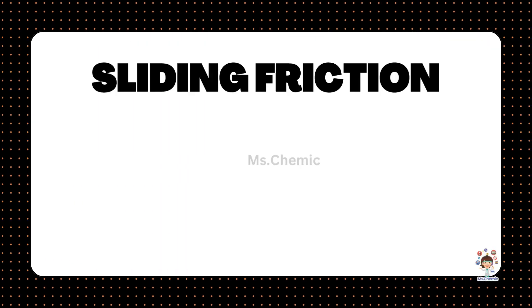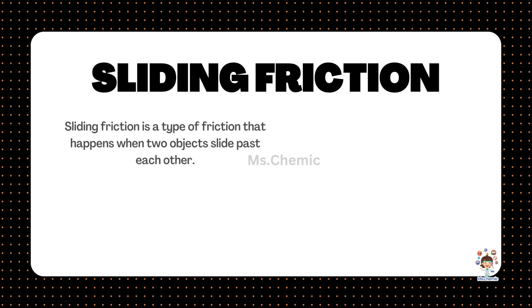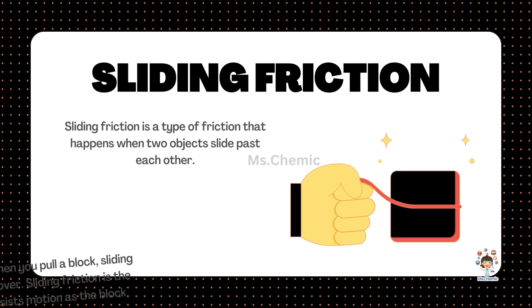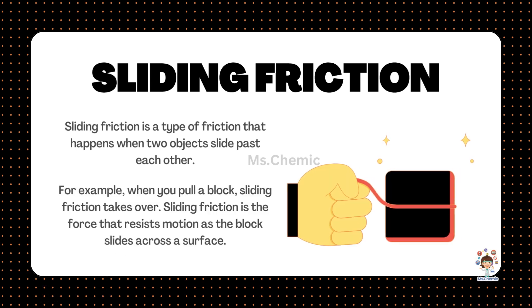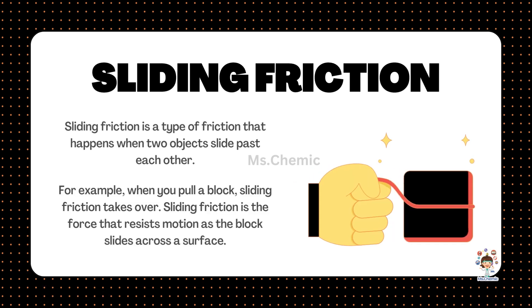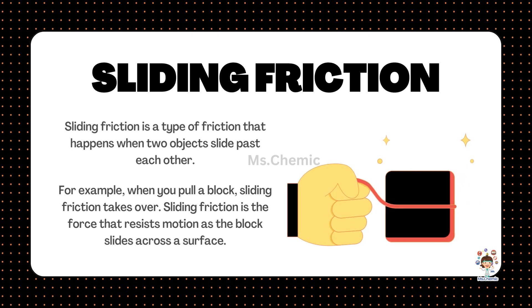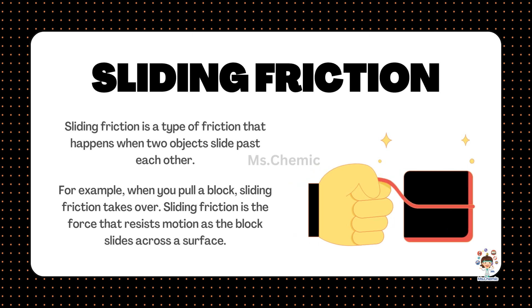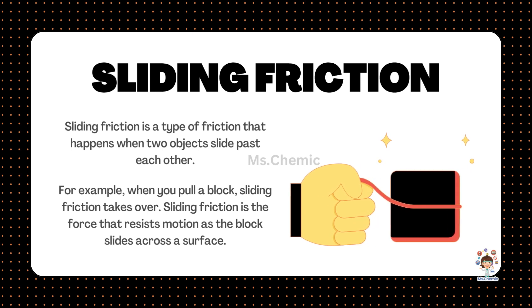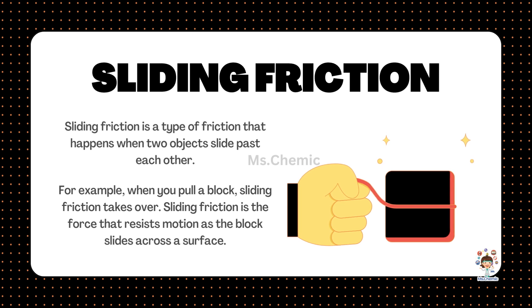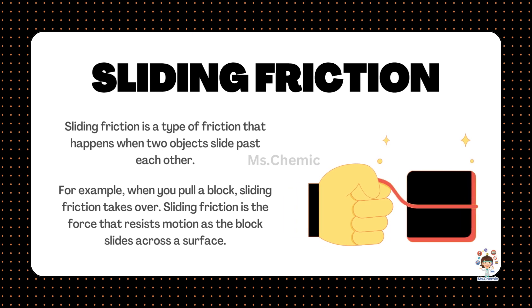Sliding Friction. Sliding friction is a type of friction that happens when two objects slide past each other. For example, when you pull a block, sliding friction takes over.